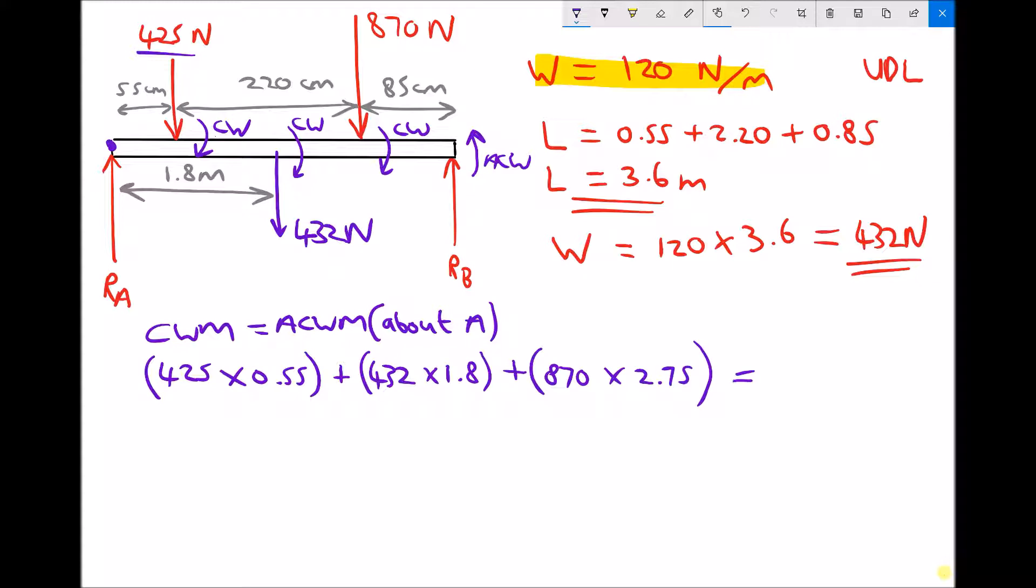And all of that is going to be balanced by RB at the opposite end of the beam. Well, we've already said the beam is 3.6 meters long. So that is all going to be balanced by the anti-clockwise moment, 3.6 RB.